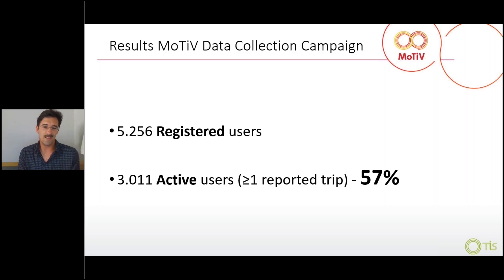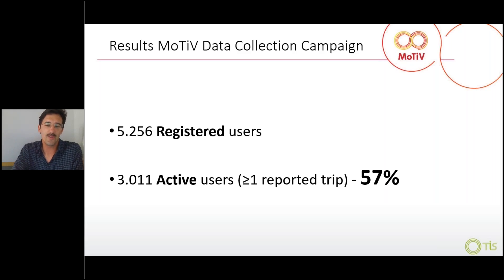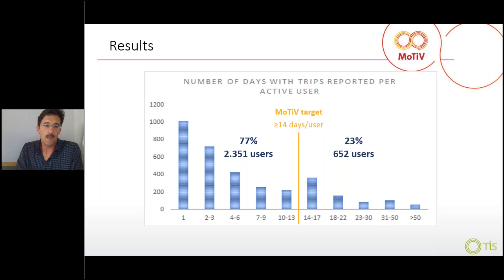App interaction is really evaluated by the number of people who actually used the app. About 3,000 people shared at least information about one trip — that's 57 percent, which is not bad for an app. Most users, as shown previously, just check the app and then immediately uninstall it. We could get a good portion sharing, but this wasn't enough — we wanted at least 14 days of trips with feedback. Among active users, 23 percent reported at least 14 days of trips.